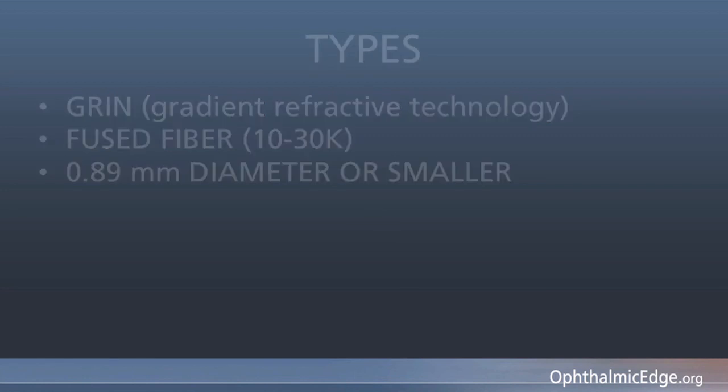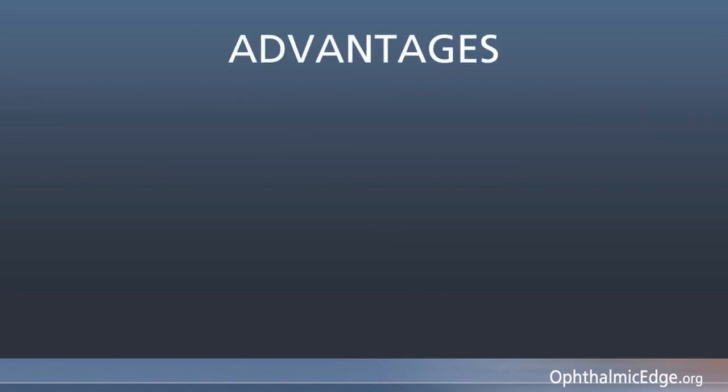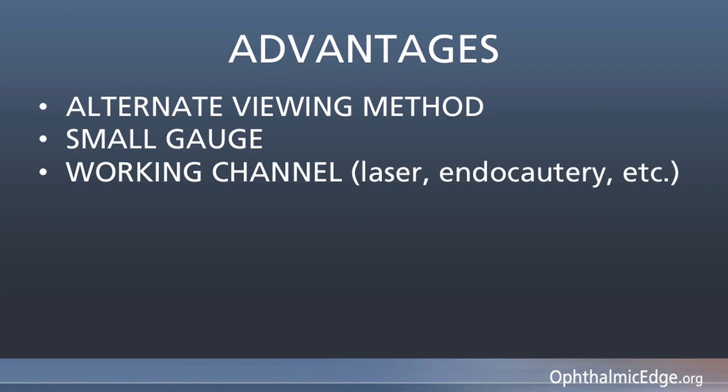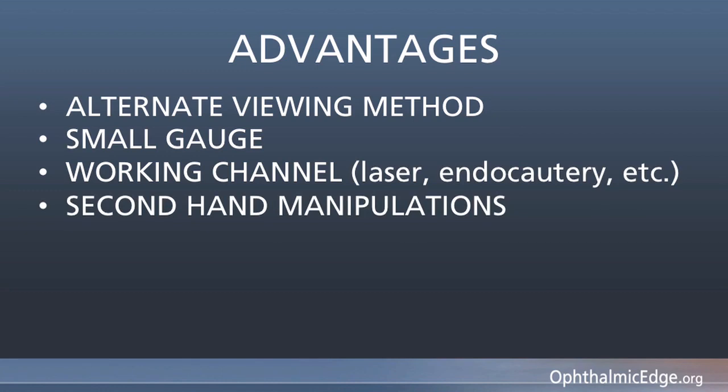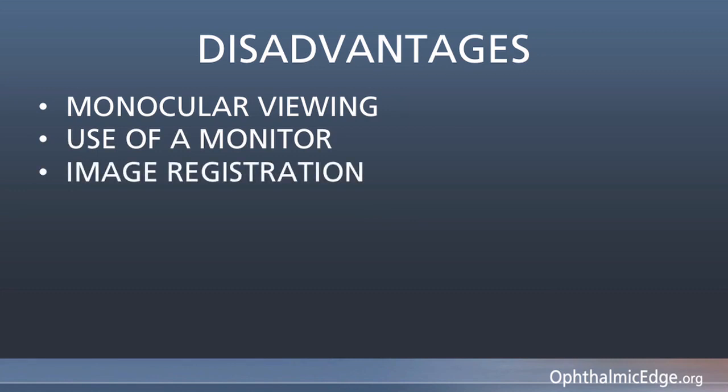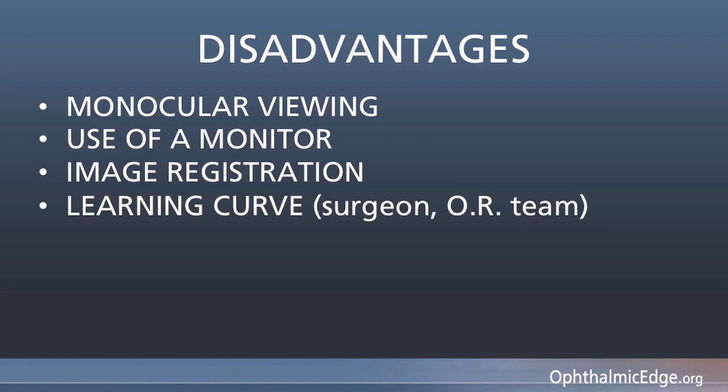The advantages of endoscopy include alternate viewing method, small-gauge work, a working channel usually with laser or endodiathermy, and it permitted a second hand for manipulation. The disadvantages were that it was a monocular view, a high-resolution monitor had to be used rather than a microscope, the image had to be well-registered, and there was a long learning curve for surgeons and the OR team.